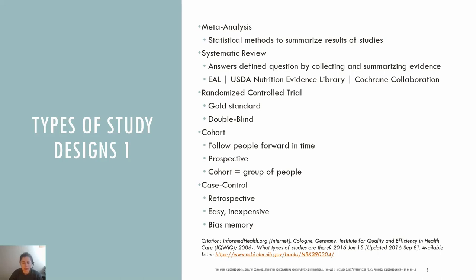Systematic reviews and meta-analyses are considered the best quality evidence about a research question because, by combining the findings of many studies, they reduce the risk of bias and generate more reliable results. You can find systematic reviews in the Evidence Analysis Library, USDA Nutrition Evidence Library, and the Cochrane Collaboration.